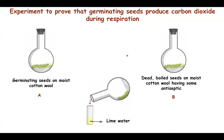We stopper flask B as well and leave both flasks for two to three days. After two or three days, flask A is taken and tilted over a test tube containing lime water. The lime water is shaken and turns milky. Then flask B is tilted in a similar manner over lime water, and we notice that the lime water does not turn milky, clearly indicating that only germinating seeds produce carbon dioxide but dead boiled seeds do not.